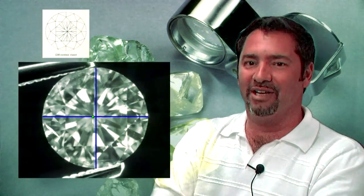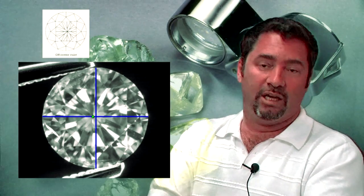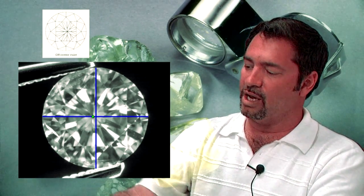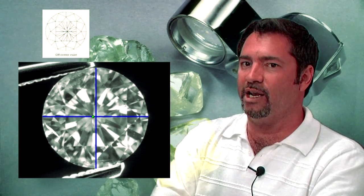This first graphic on the screen shows an outlined example of something commonly seen in round brilliant cuts, where the culet is off-centered. This will affect the symmetry grading of a diamond.